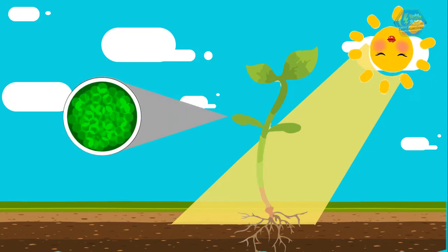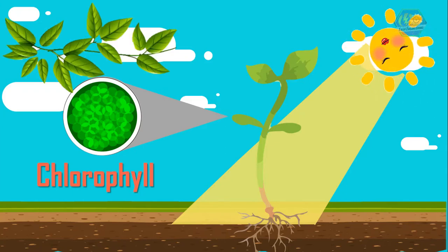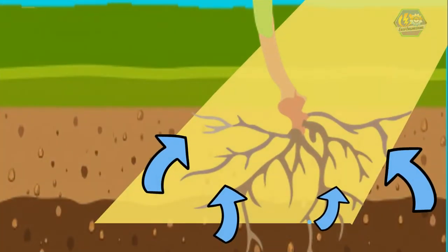Chlorophyll is green, which is why almost all leaves of the plants are green. Plants get the water from the soil below. They absorb the water through their entire surface but mostly they absorb using the roots.